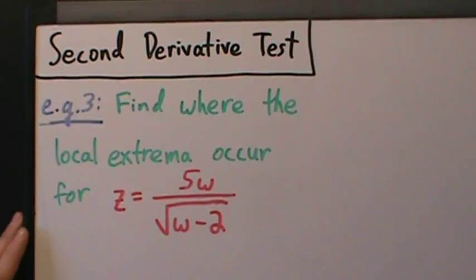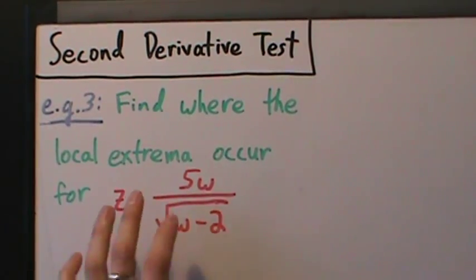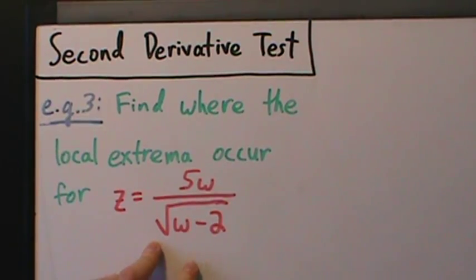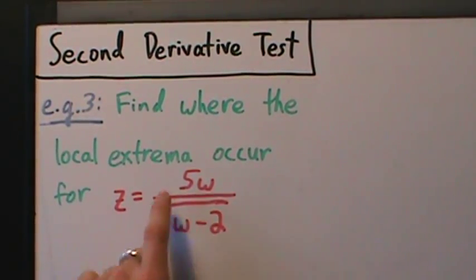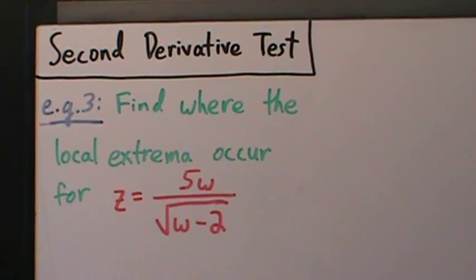Here's example 3 with the second derivative test, and just like the other two examples, this is the same one we looked at for the first derivative test example 3. We have the function z equals 5w divided by the square root of w minus 2. We're going to find where the local extrema occur — in other words, where are the mins, where are the maxes — and we don't care what they are, just where they are.